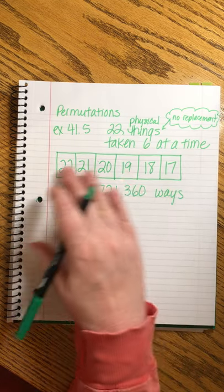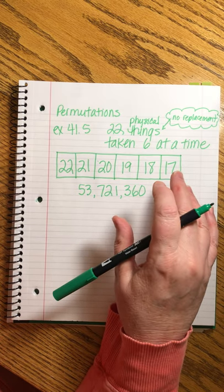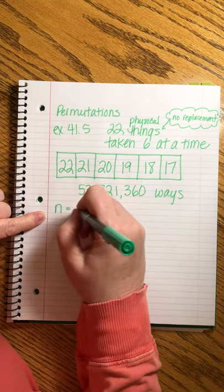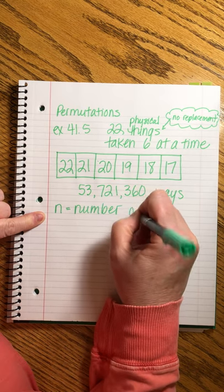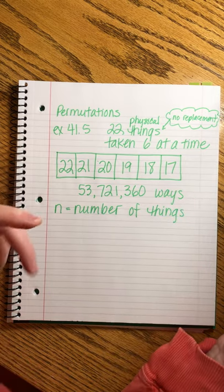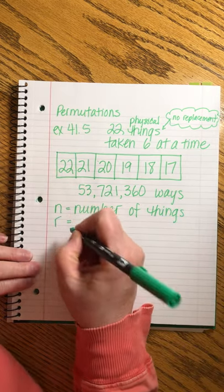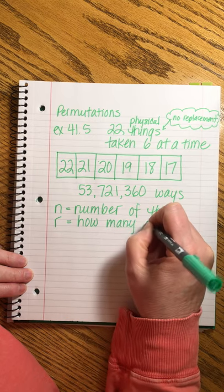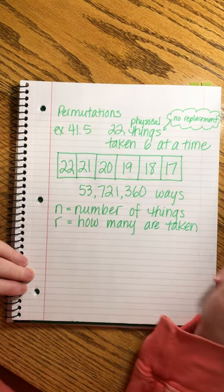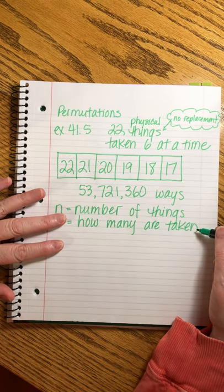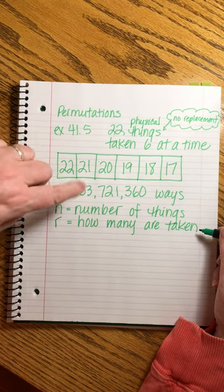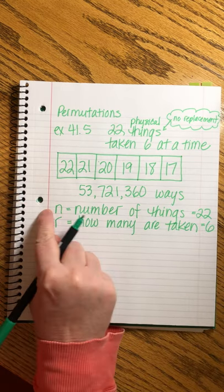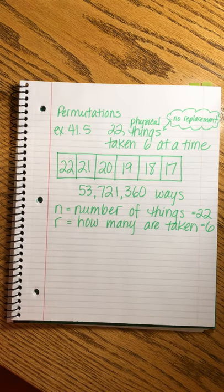Now, what if we don't want to draw a picture like this and go about the very cumbersome way of laying out this problem? There is a formula for how we can do it. We let one variable, we'll call it n. And that represents the number of things. In our case, it's 22. R represents how many are taken. This one, it's the hardest to put the right words to. But when we say 22 things taken six at a time, it's 22 things taken six at a time. Okay? Usually it's easy to understand this one. This one, the wording gets a little awkward, but it's just the other number.